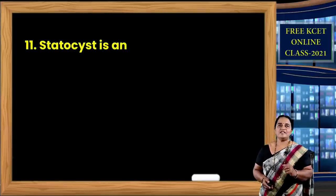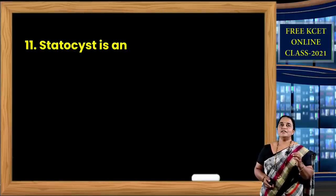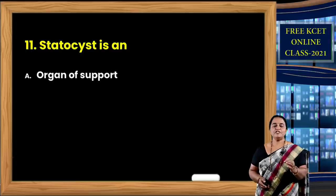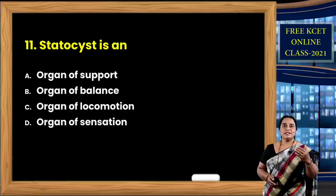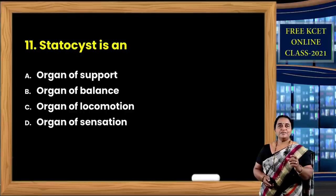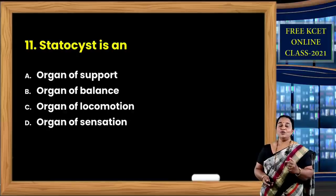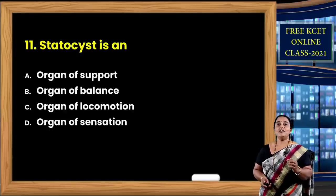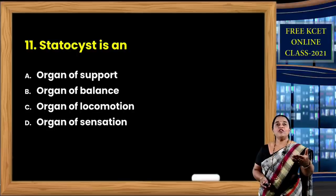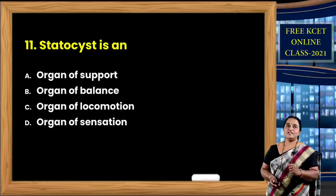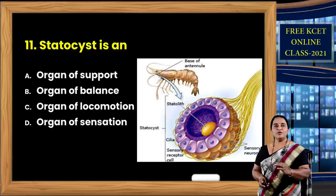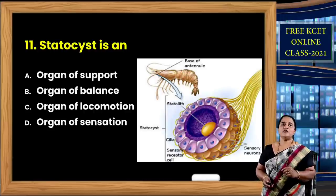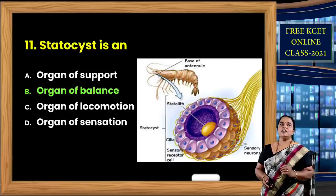Question 11: Statocyst. The largest phylum, arthropoda, is known for jointed appendages, chitinous exoskeleton, and well-developed sense organs. There is an organ called statocyst — options are organ of support, organ of balance, organ of locomotion, organ of sensation. Statocyst is an organ of balance.